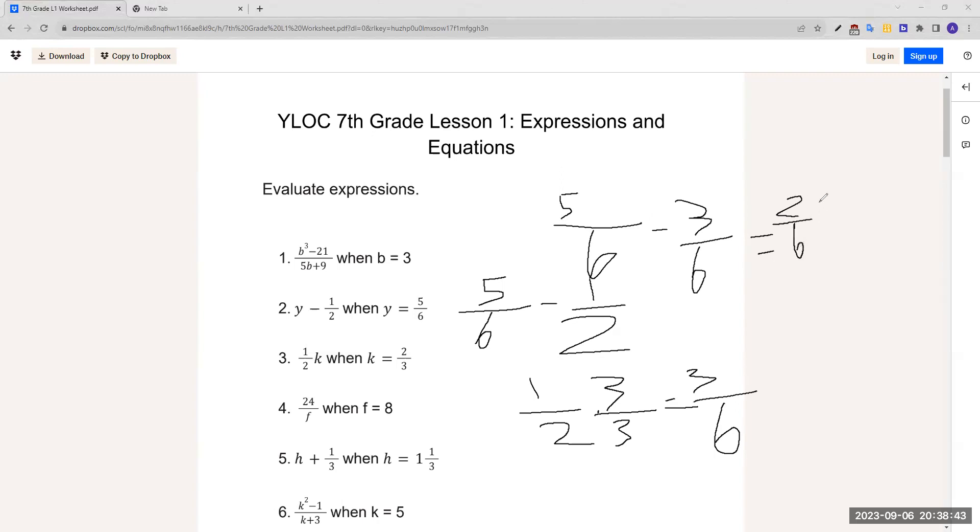But again, we can simplify this further by dividing both numerator and denominator by 2, so it's 1 over 3. That's our answer.